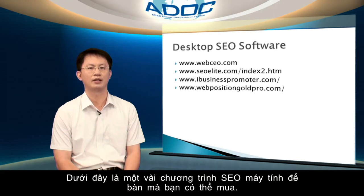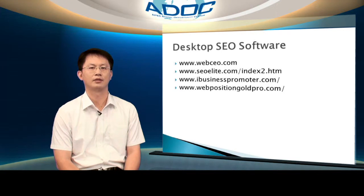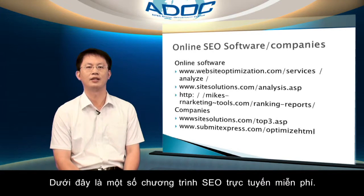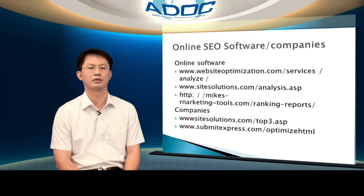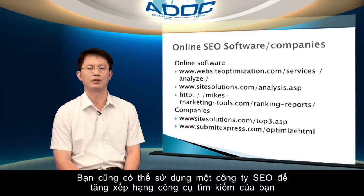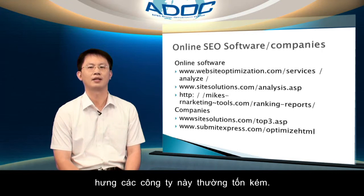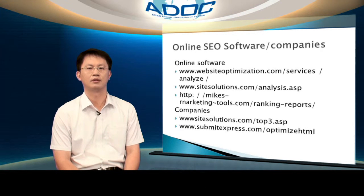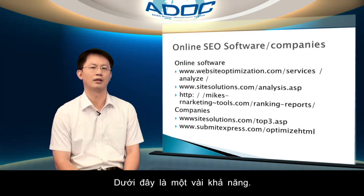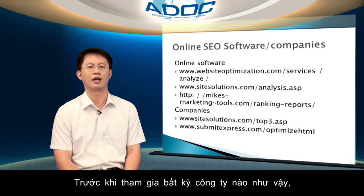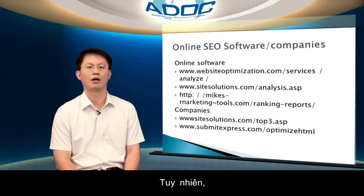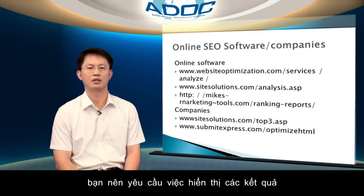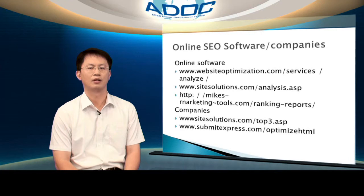Here are a couple of desktop SEO programs that you can buy, and here are some free online SEO programs. You can also use an SEO company to boost your search engine ranking, but these companies are often expensive. Just search for SEO on Google. Here are a couple of possibilities, but before engaging any such companies, you should ask for demonstrations of their results — what sites have they helped, and what are those sites' rankings?